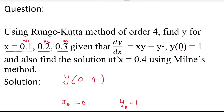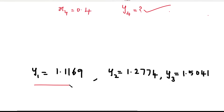In the previous video, we solved the same problem: dy/dx equals x·y plus y squared, where y(0) equal to 1, and we found the three values y(0.1), y(0.2), y(0.3). Hope you found those values in the previous video — a link is in the description. From the previous video, y1 equal to 1.1169, y2 equal to 1.2774, and y3 equal to 1.5041.